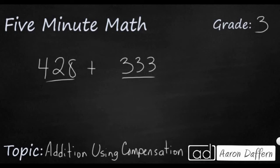But what if I were to do this? My 28 is really close to 30. So what if I were to take just a few away from 333? I'm going to take two away. So I took two away from 333 and I made it 331. And in my brain, what I did is I just added that to my 428, because I know 428 is 2 away from a multiple of 10.